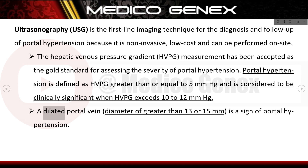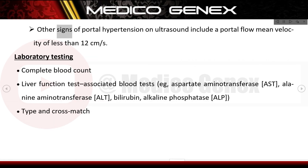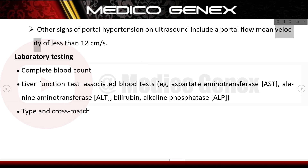A dilated portal vein diameter of greater than 13 or 15 millimeters is a sign of portal hypertension. Other signs on ultrasound include a portal flow mean velocity of less than 12 cm/s.